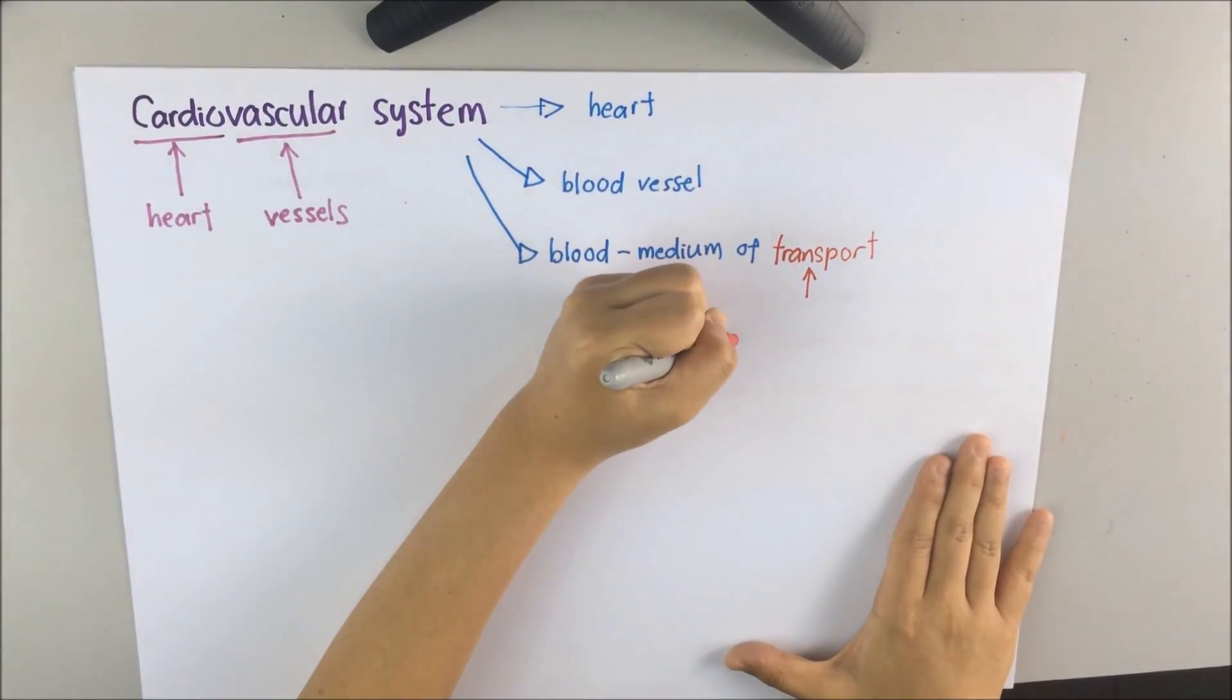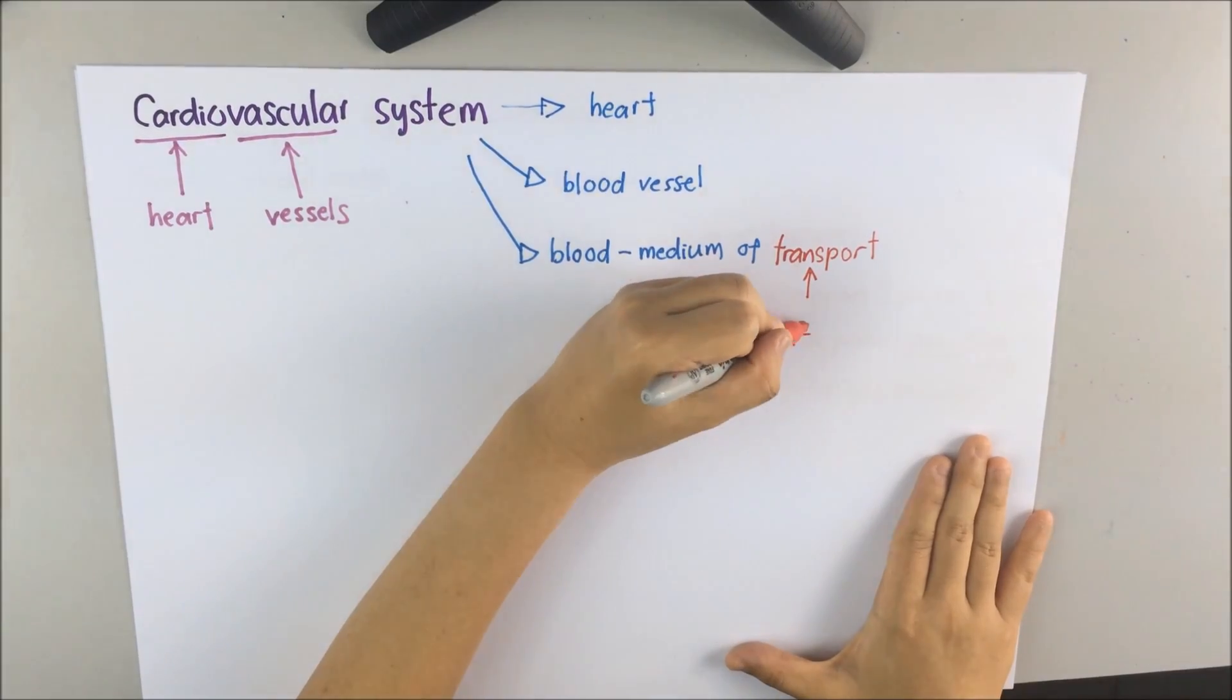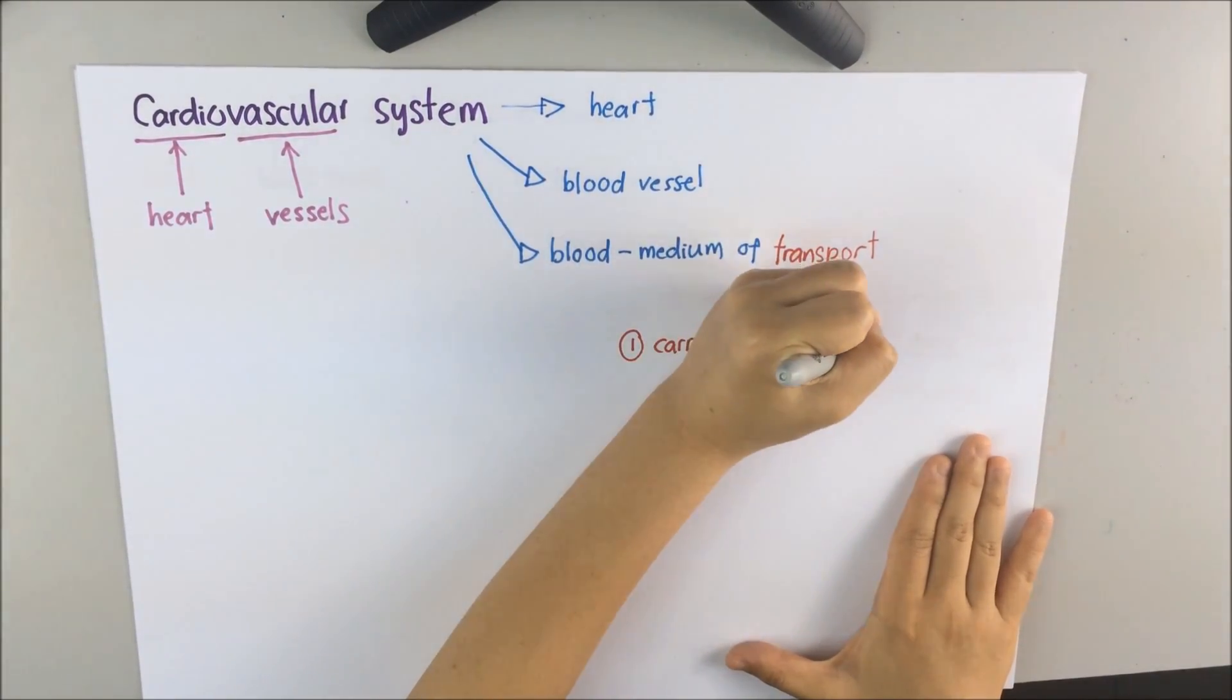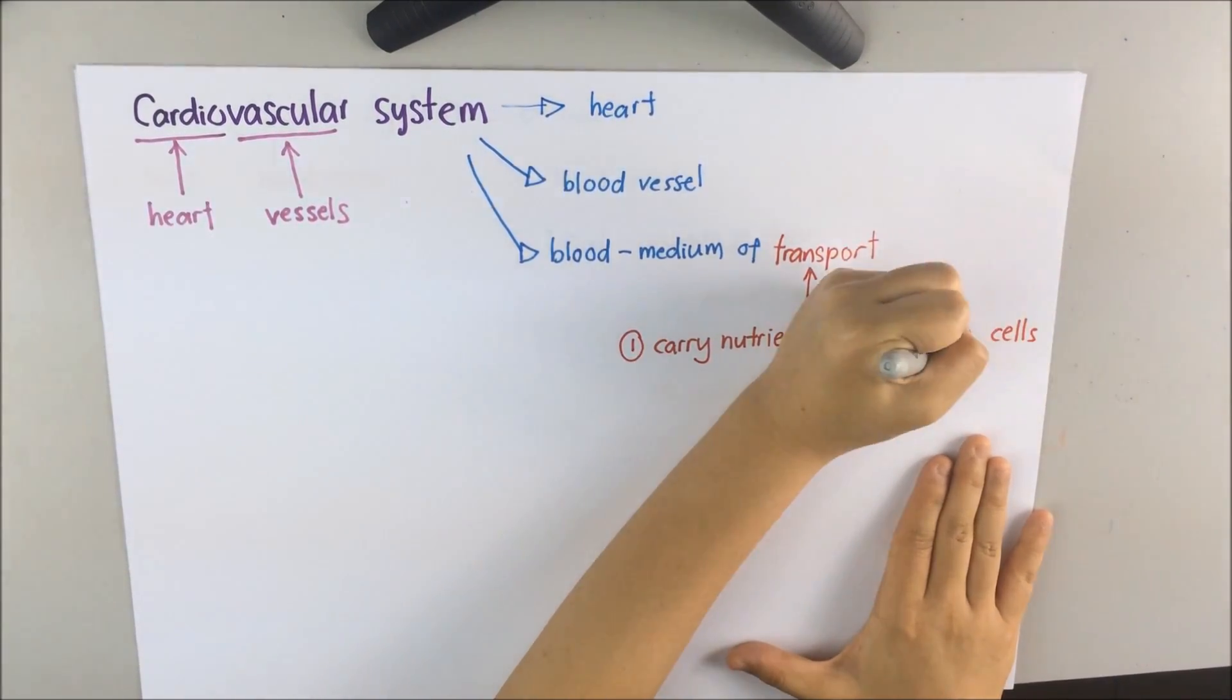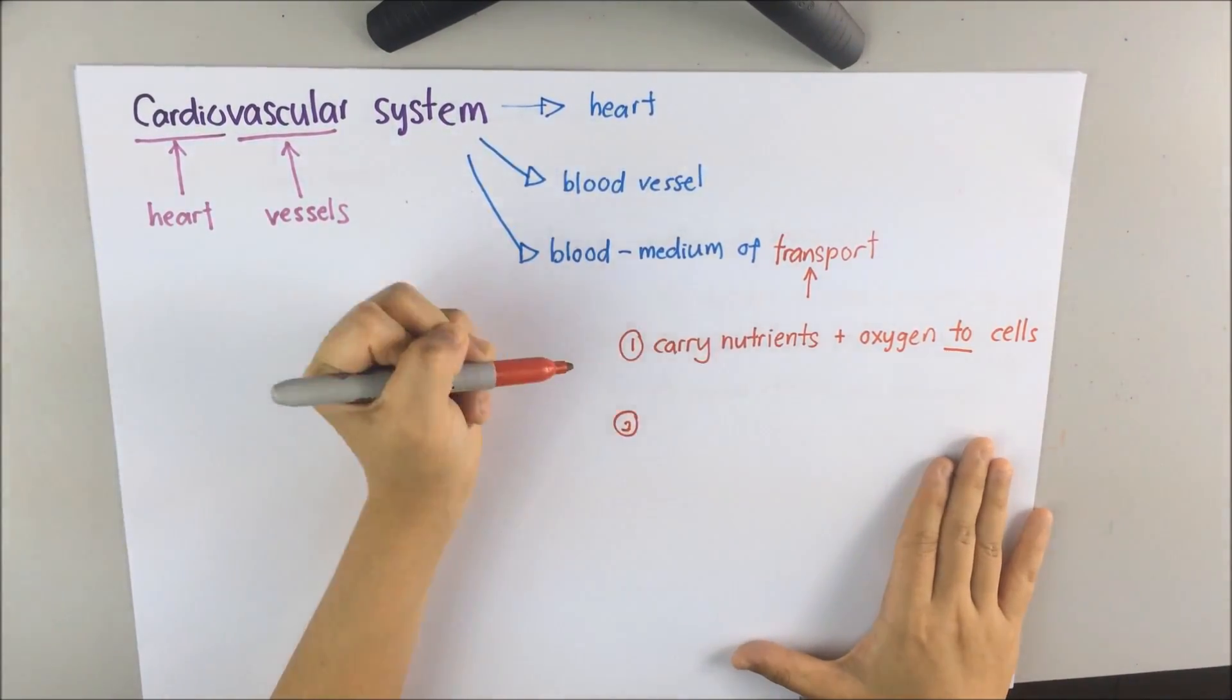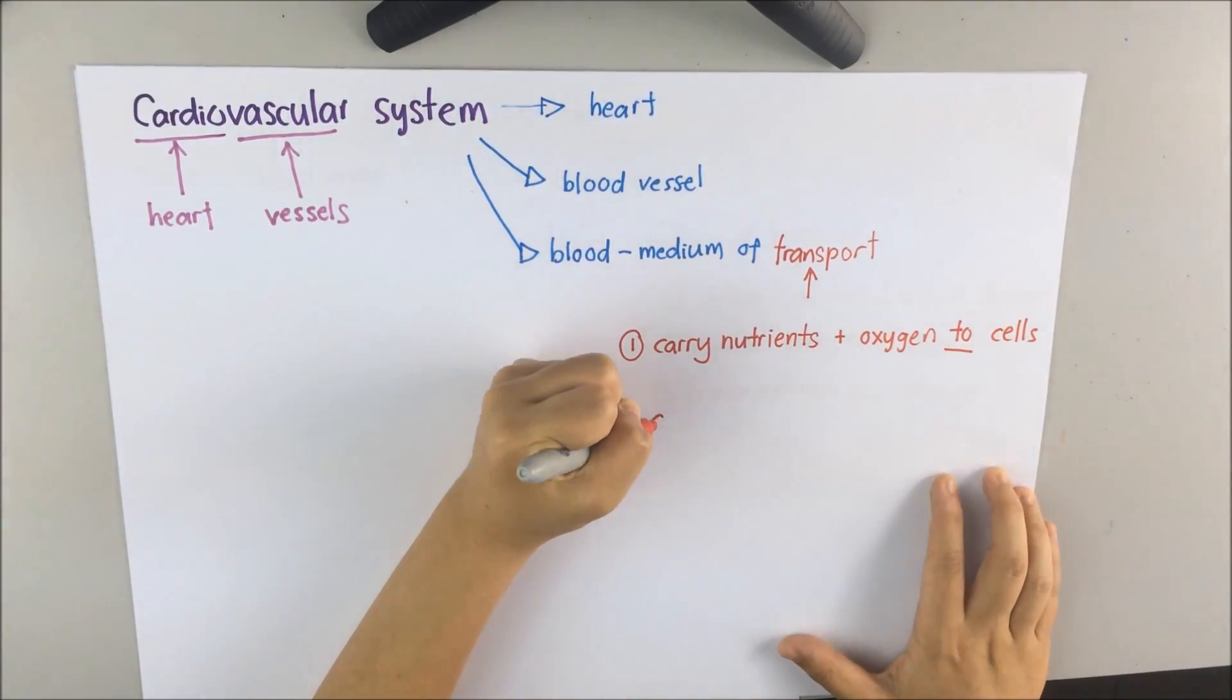What does blood transport actually? It is mainly to carry the nutrients and oxygen to the cells and also to carry the waste products away from the cells.